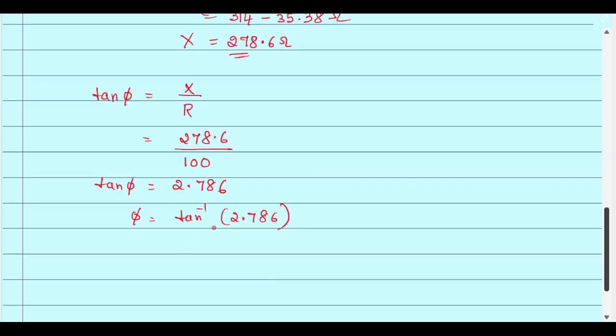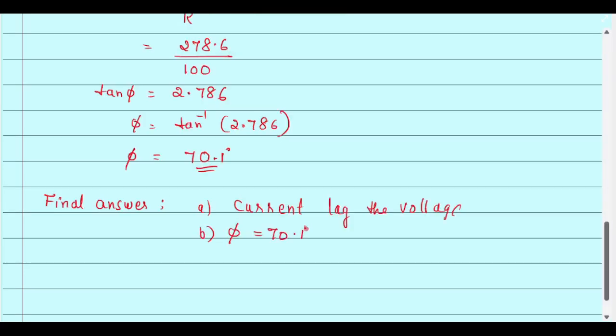Now using the logbook, we can find the value of 2.786. So the phase difference is nothing but 70.1 degree. The final answer is current lags the voltage and the phase difference phi is nothing but 70.1 degree.